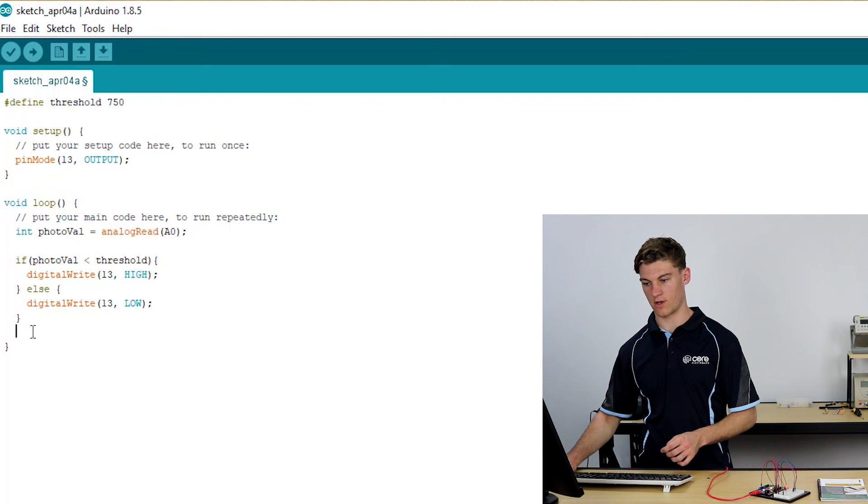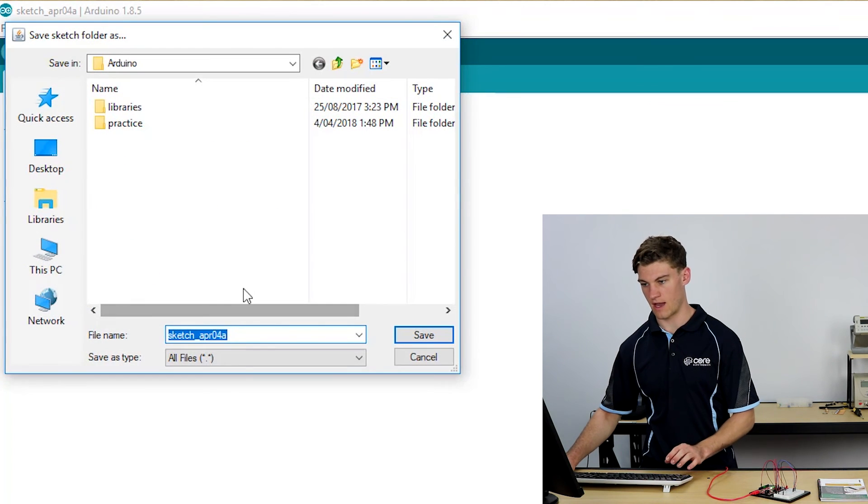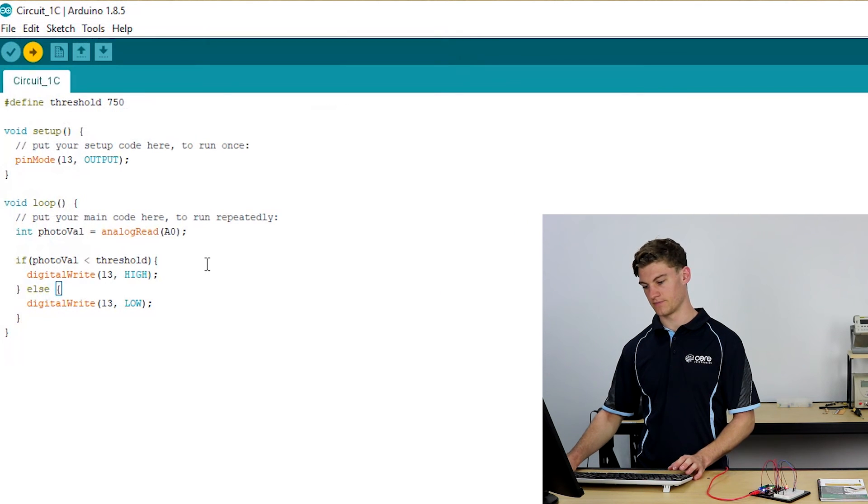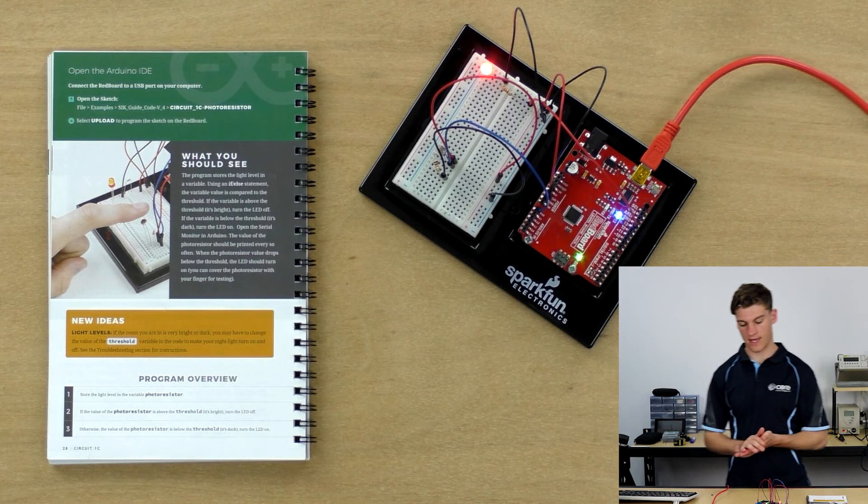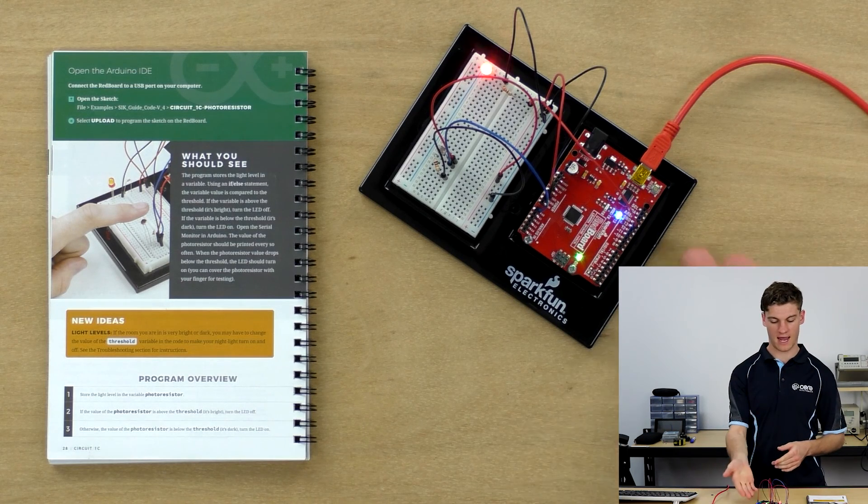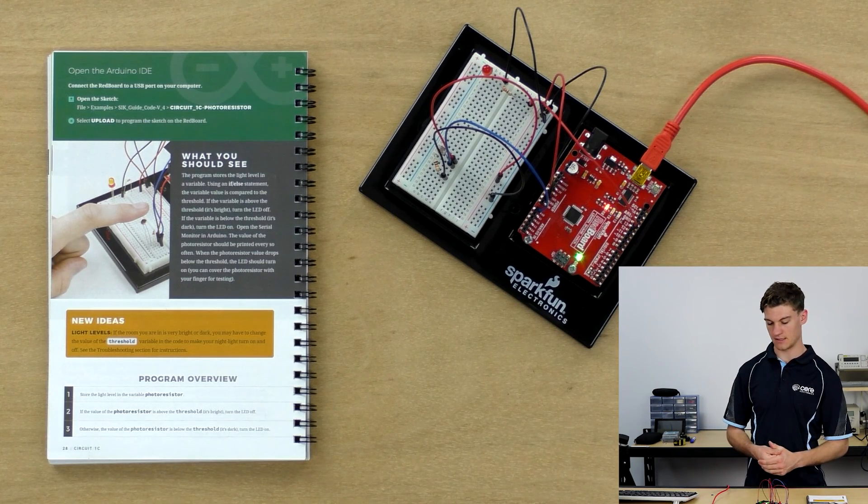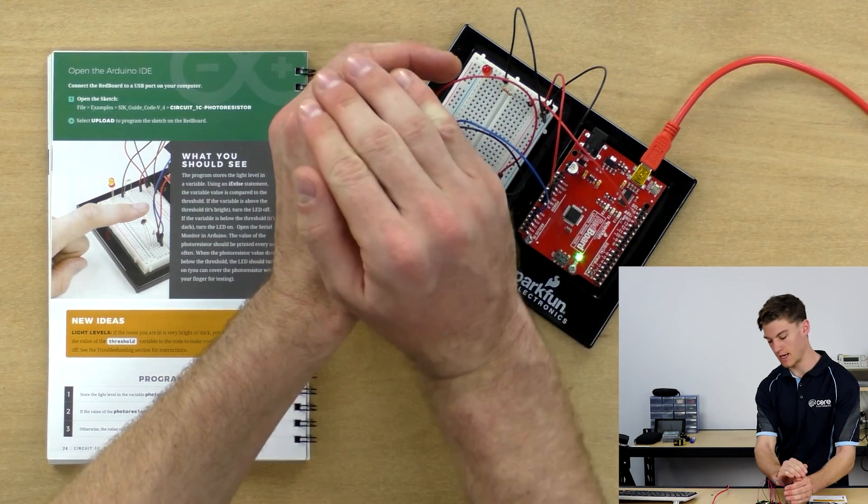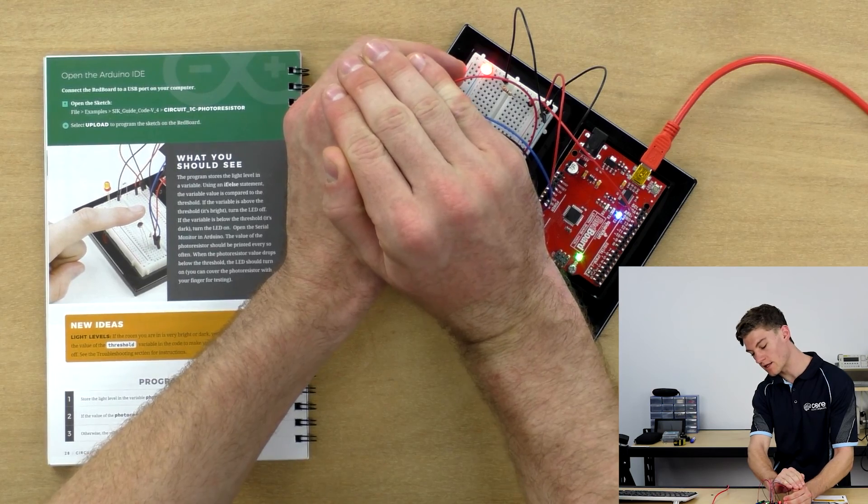And then we will compile that and upload it. We're going to save it once again as circuit 1C. So it'll compile that and it'll overwrite our previous statement. It's done uploading and if we cover this the light should turn on.